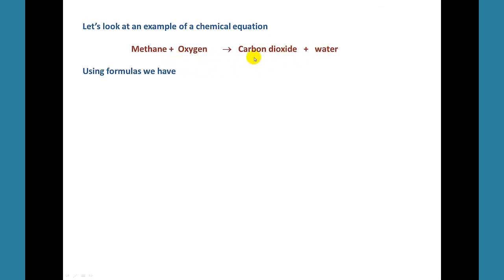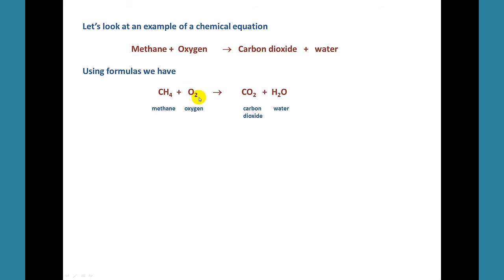Usually we write a chemical equation using chemical formulas. Here we have the chemical formula for methane — one carbon with four hydrogens — and here is oxygen. Notice that the oxygen in the air that we breathe contains two oxygen atoms, so this is actually molecular oxygen. The reactants are methane and oxygen, and the products formed are carbon dioxide and water.